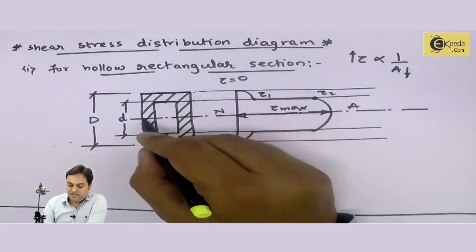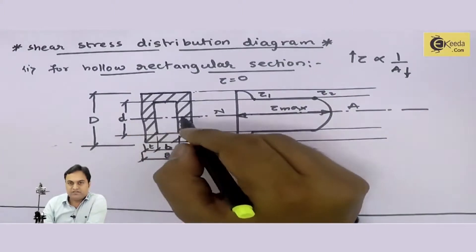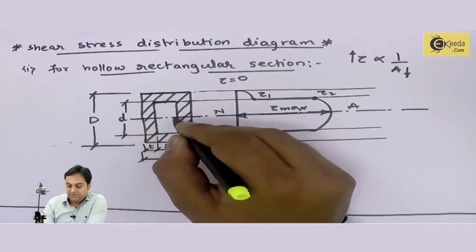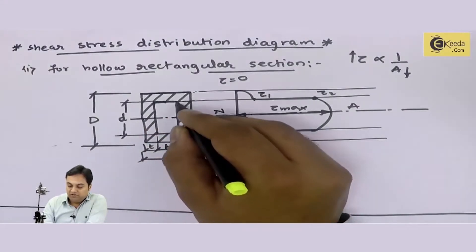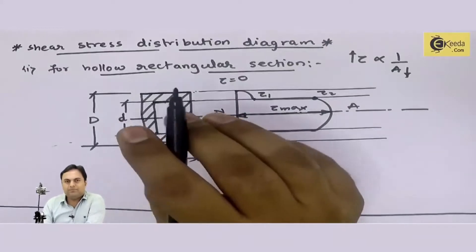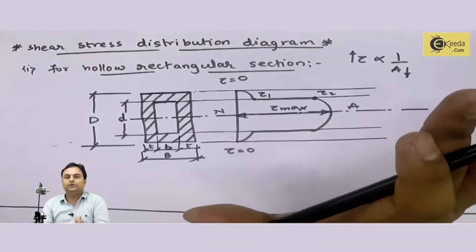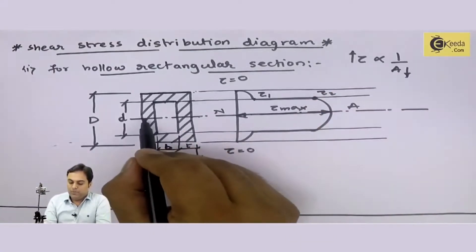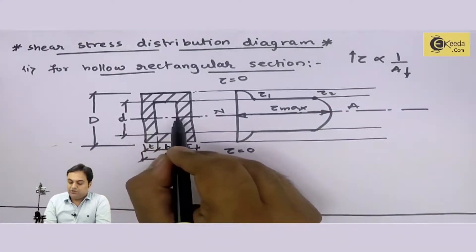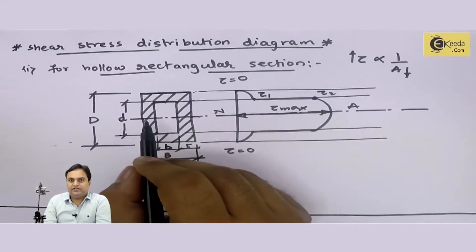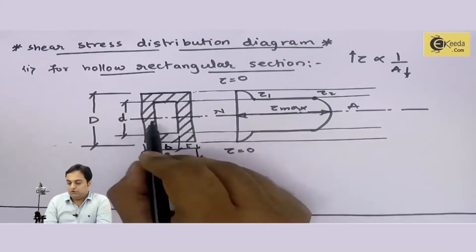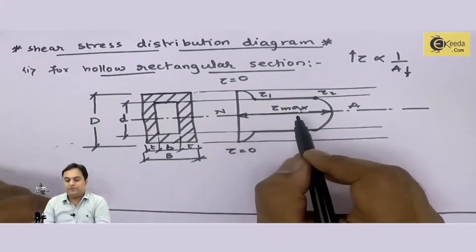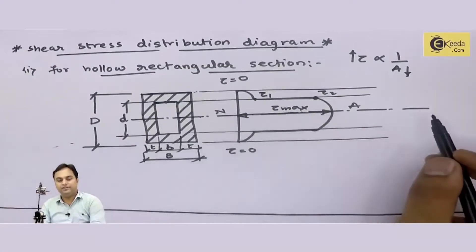At the neutral axis, the thickness is T and the width is only this much. Because of this small amount of thickness, the area will be the least. Because the area is least, the stress will be maximum. So I am getting maximum shear stress at the center.